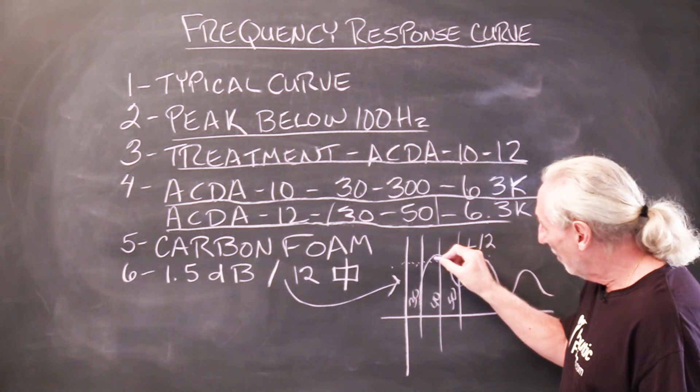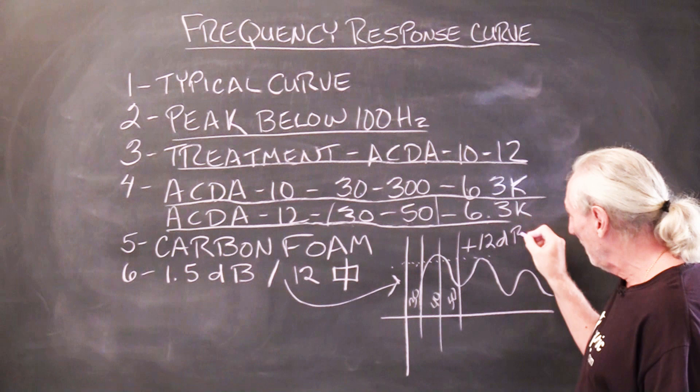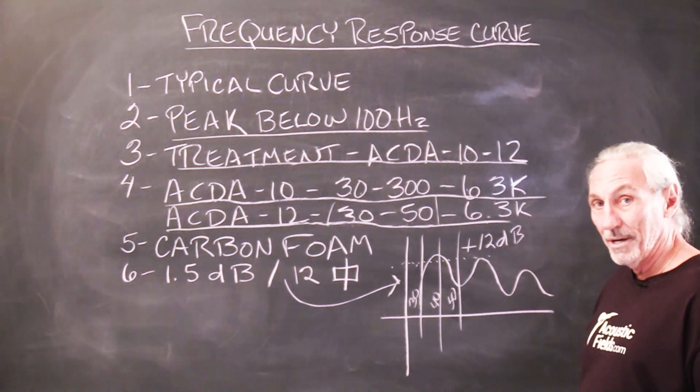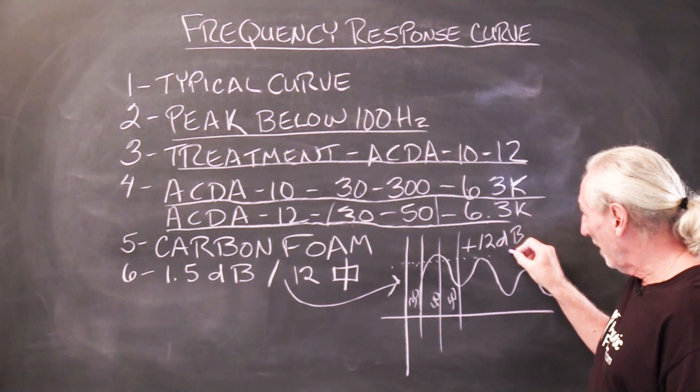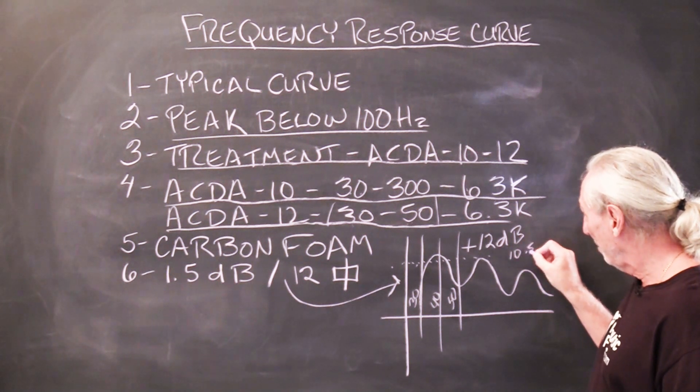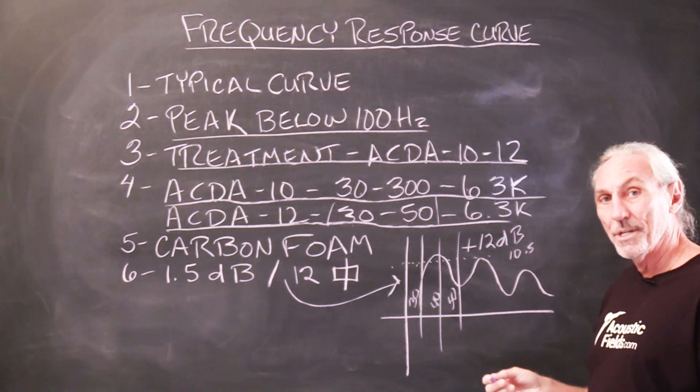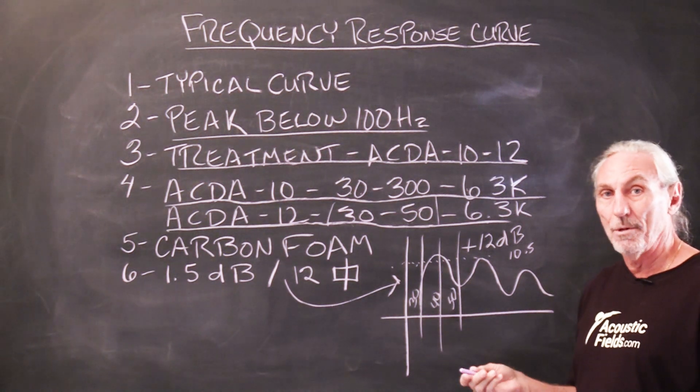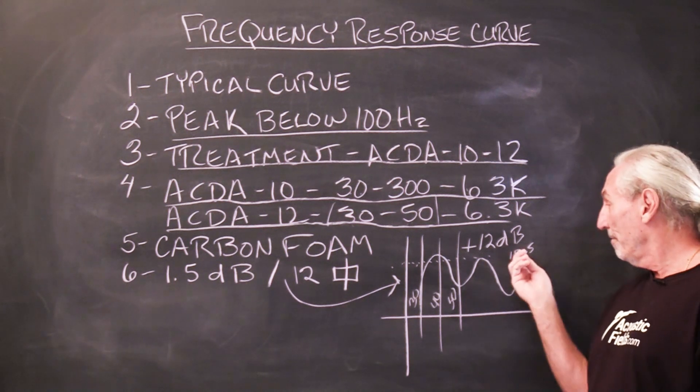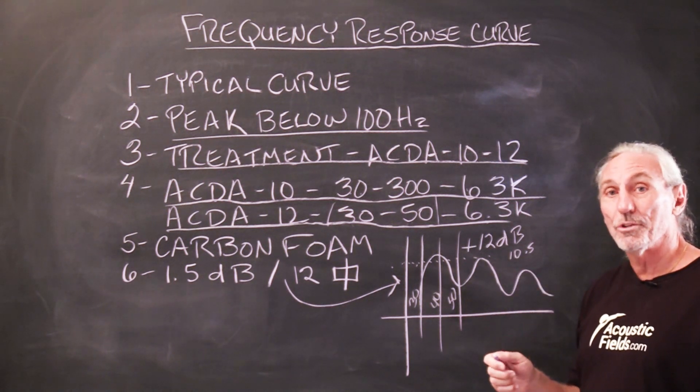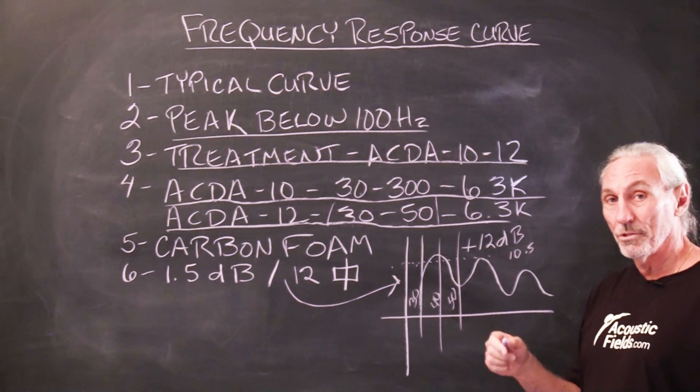Then we take 1.5 dB off this 12 dB peak. Now is that enough? Well, lowering from 12 to what that would be 10.5? No, we can't have a 10.5 dB peak in our room. That's craziness and we can't EQ that. You ever tried EQ on a 10.5 dB peak? Sounds stupid. That's the word for it—just say stupid—because you'll hear it immediately in your mix.